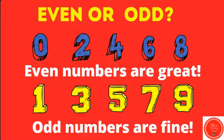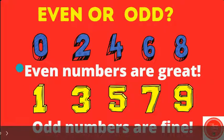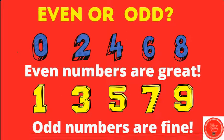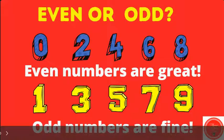Is the number two even or odd? Zero, two, four, six, eight — even numbers are great. One, three, five, seven, nine — odd numbers are fine.